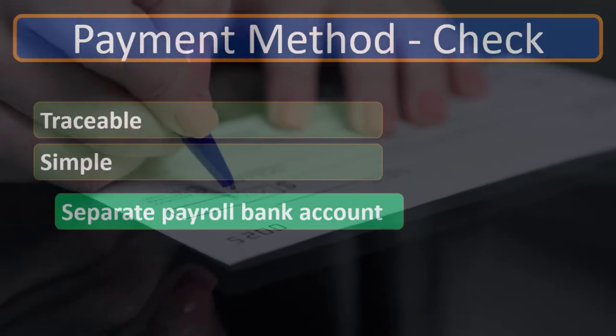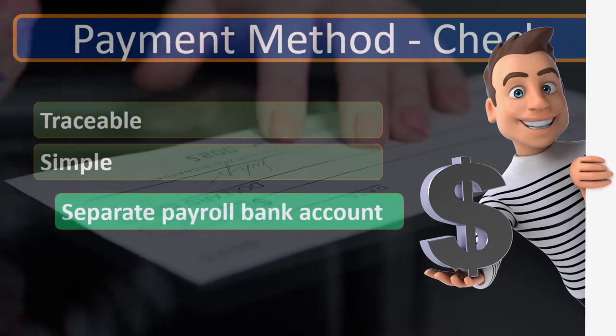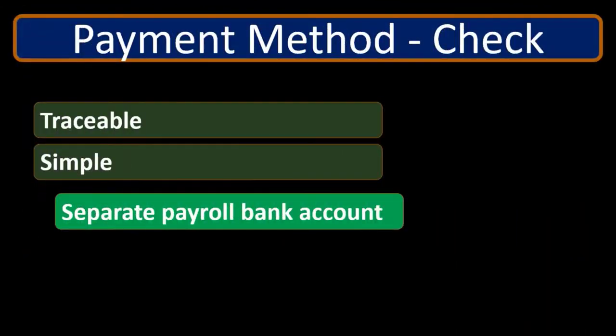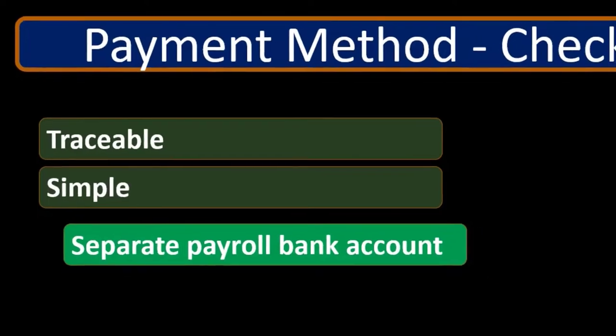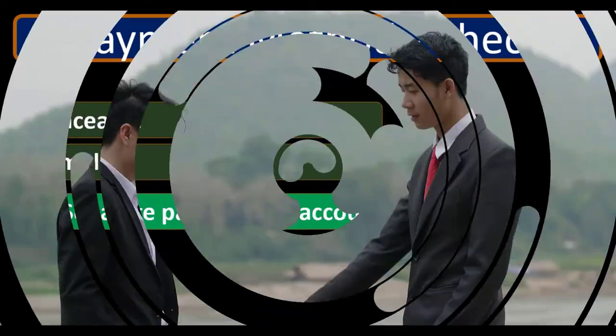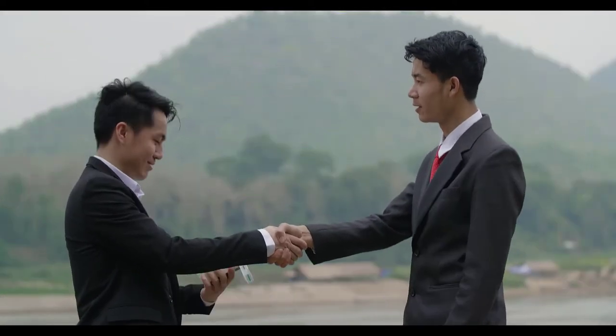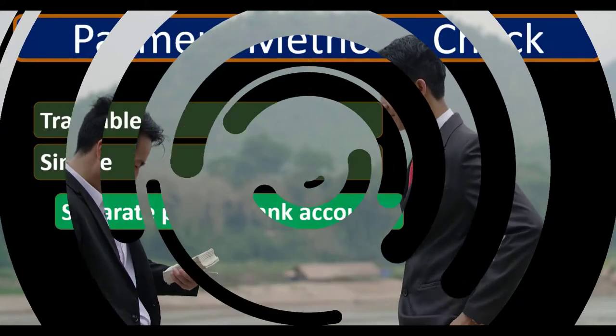Now for payment methods — typically the classic payment method would be by check. We want to avoid payment by cash mainly because it's less secure and harder to maintain internal controls. It usually doesn't meet the requirements we want for typical payment methods, including being traceable and having a record of it. We typically need to inform employees with each payment how much they're getting paid net, what was deducted, and how those deductions were calculated.